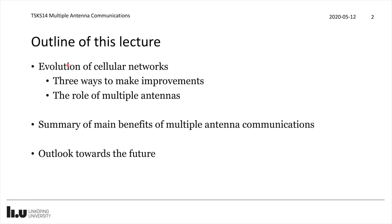I will talk about the evolution of cellular networks, in particular three ways of making improvements, and then the role of multiple antennas in those different ways. Then I will give you a brief summary of the main benefits of multiple antenna communications that I've been talking about previously in this course, and I will wrap up with a short outlook towards the future — what will happen with the multiple antenna technology, as far as we can predict it right now.